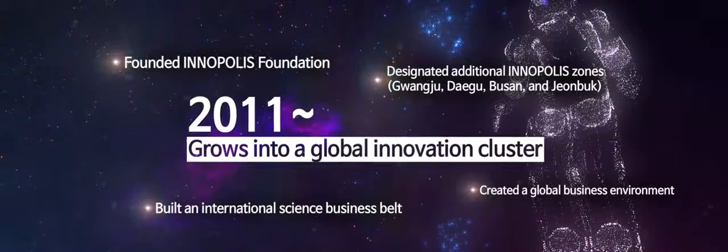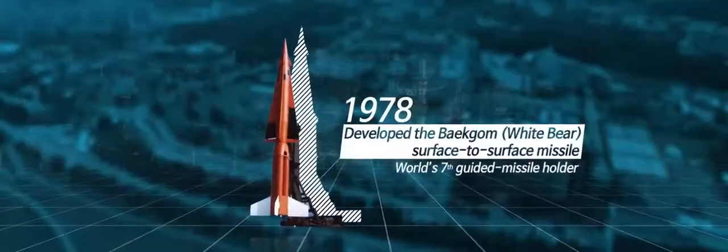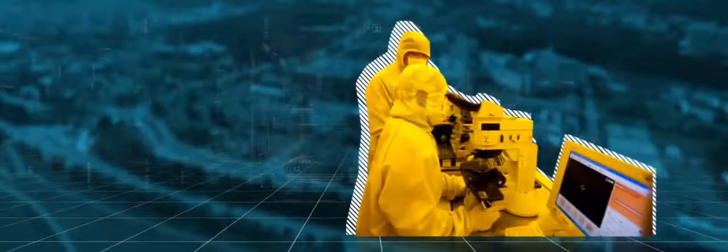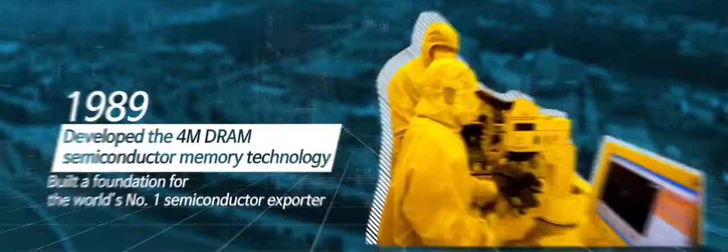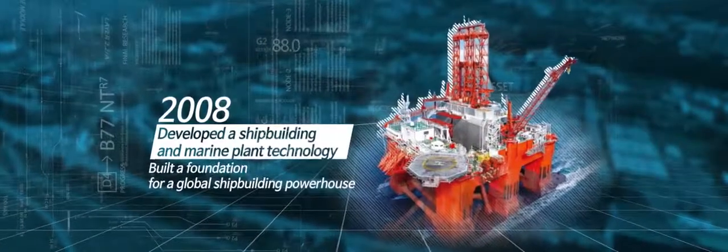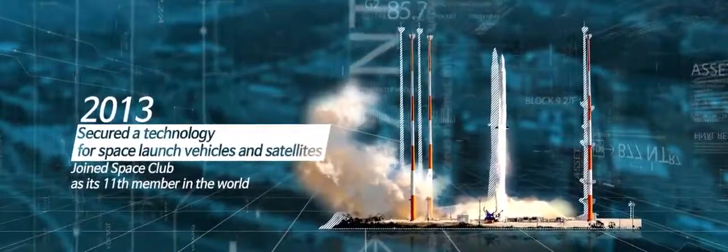They have made Korea the only country in the world that has been transformed from an assisted country to an assisting one, as well as the world's largest exporter of semiconductors, an advanced ICT country, a global shipbuilding powerhouse, and the world's 11th space club member state.